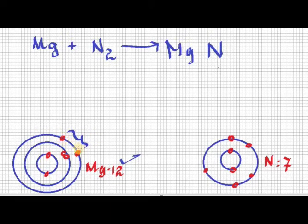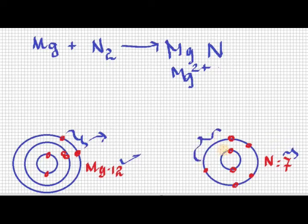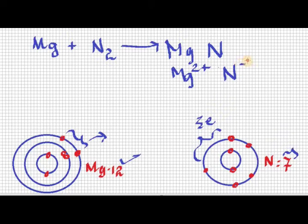Always remember the law of octet — the outermost orbit must have eight electrons. Magnesium has only two electrons in its outermost orbit, so being a metal it will lose two electrons to form a bond. We write magnesium as Mg²⁺. Nitrogen's atomic number is 7: two electrons in the first orbit and five in the outermost. Since it needs eight, nitrogen requires three more electrons, so we write it as N³⁻.